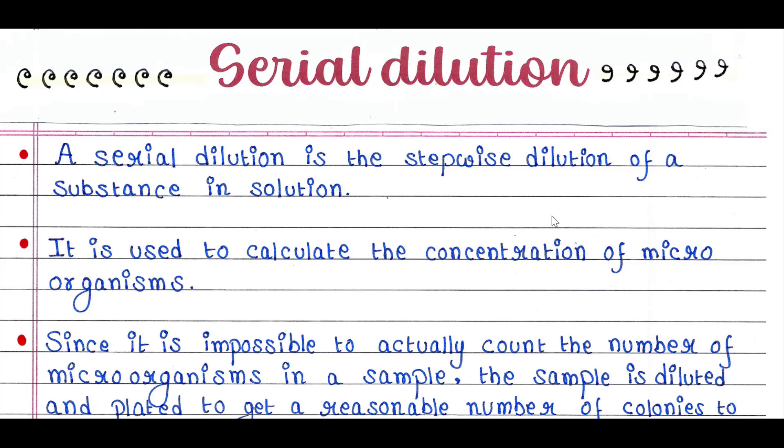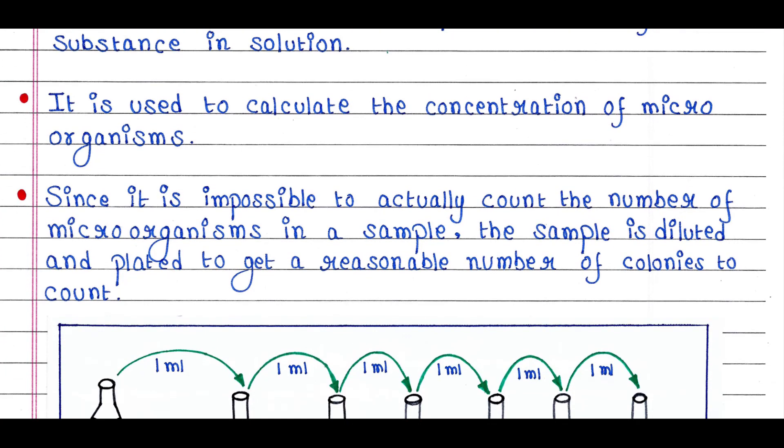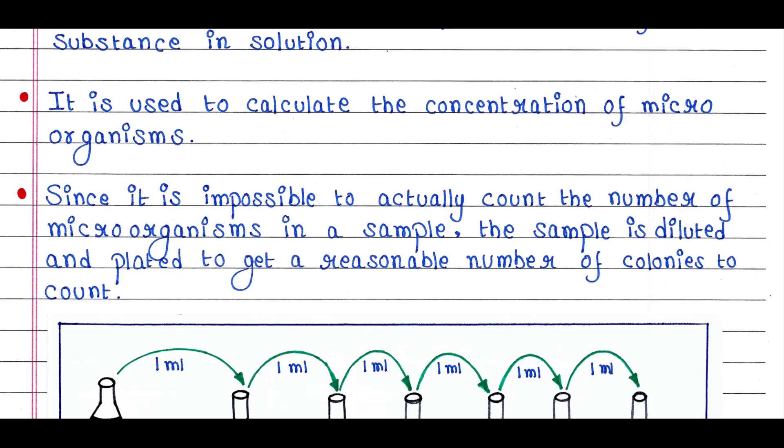A serial dilution is the stepwise dilution of a substance in solution. It is used to calculate the concentration of microorganisms. Since it is impossible to actually count the number of microorganisms in a sample, the sample is diluted and plated to get a reasonable number of colonies to count.